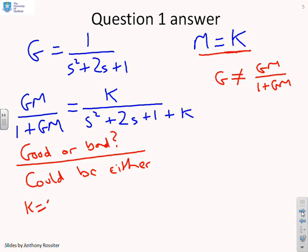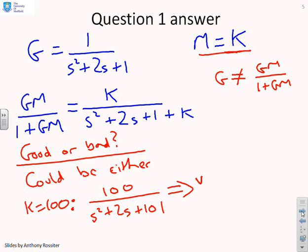So for example, if here I chose k equal 100, what would I get? I'd get 100 over s squared plus 2s plus 101 and this is clearly very underdamped. So you can see that it's possible with feedback to make performance very poor indeed. So just because you've used feedback doesn't mean you've necessarily improved performance.